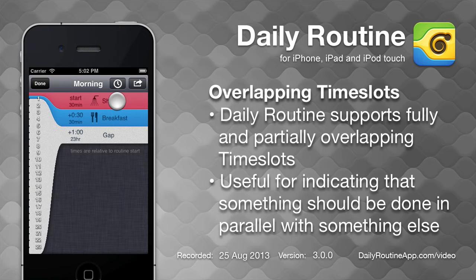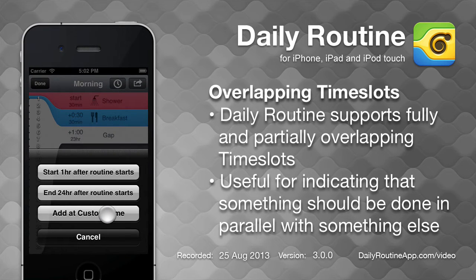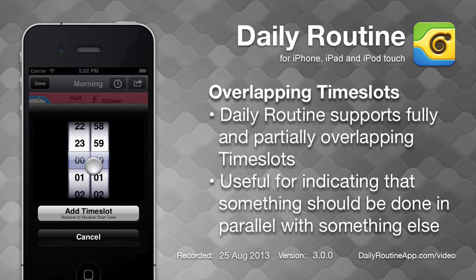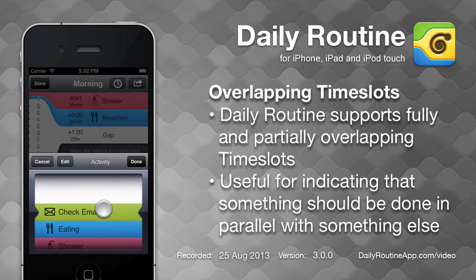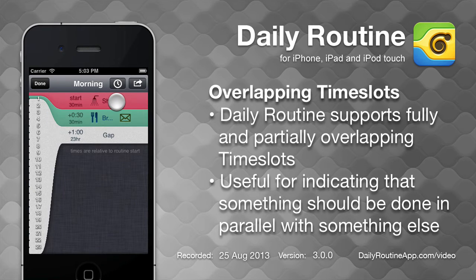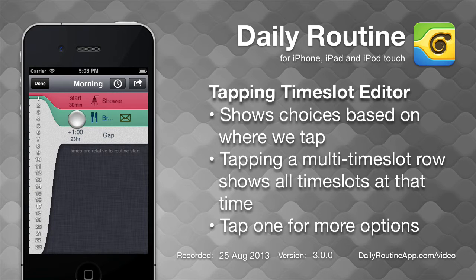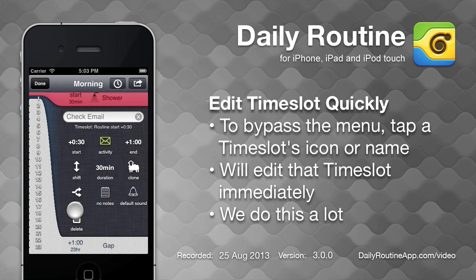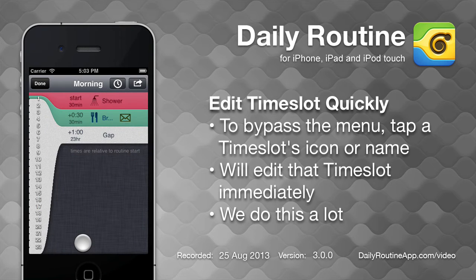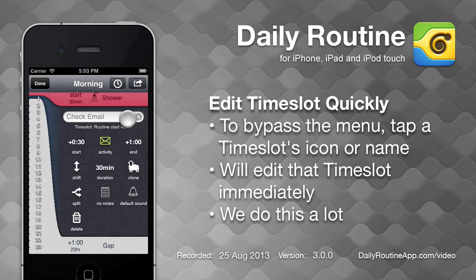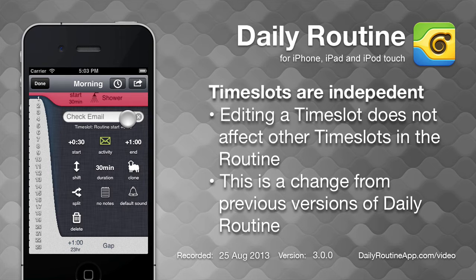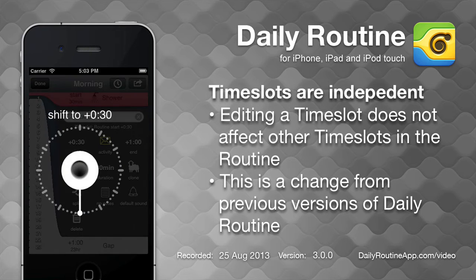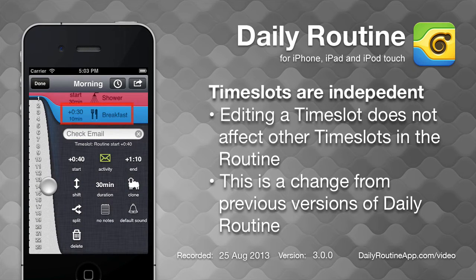We can also add overlapping time slots. For example, we can select Add a Custom Time, then pick a time which overlaps another time slot. Once we select the activity, we now have concurrent time slots. Tapping a multi-time slot row presents a choice; tapping one of the choices will edit that time slot. To save time, we can bypass this choice by tapping a specific time slot's icon or name, which edits that time slot immediately. Time slots are edited independently — for example, if we use the Shift feature to move this time slot back a few minutes, the other time slot is unchanged. The time slots now only partially overlap.